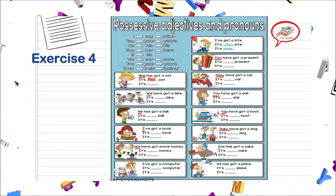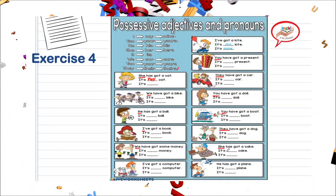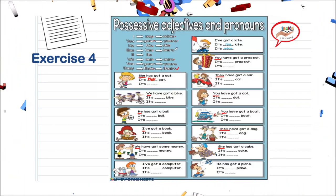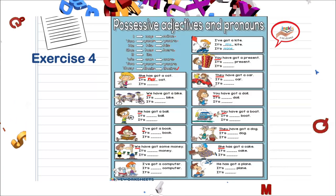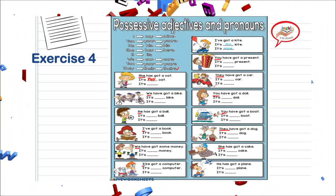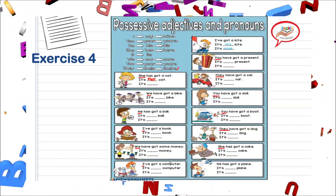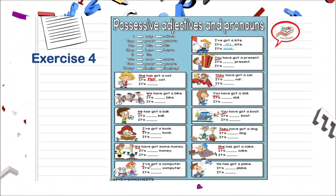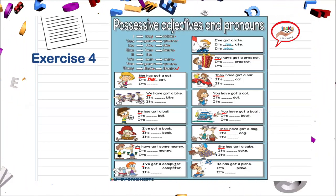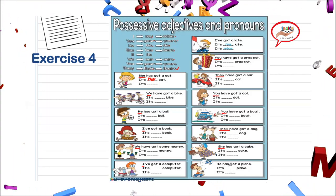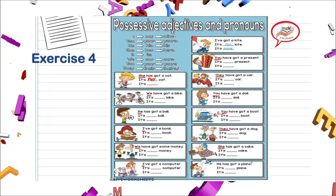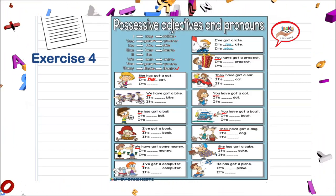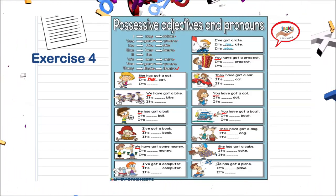She has got a cake — it's her cake. Very good. ¿Y el possessive pronoun? It's hers. I got a computer — it's my computer, it's mine. He has got a plane — it's his, porque estamos hablando de he.